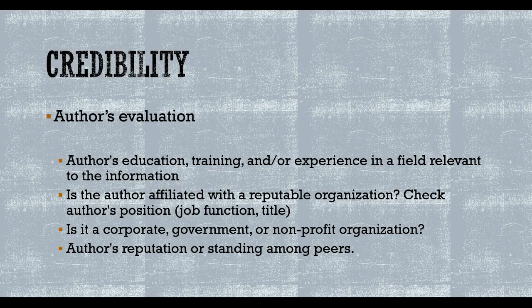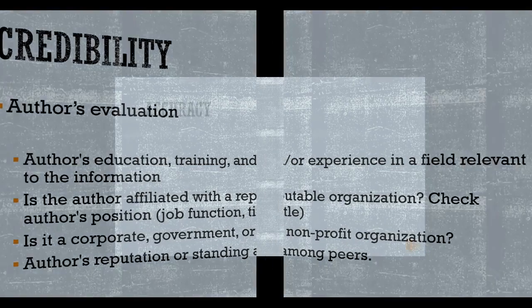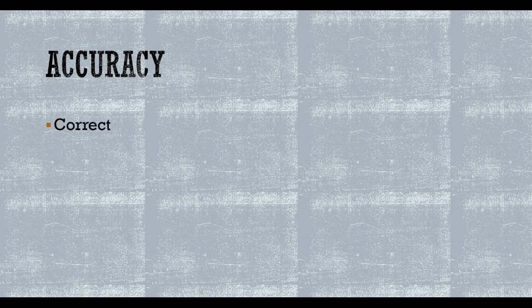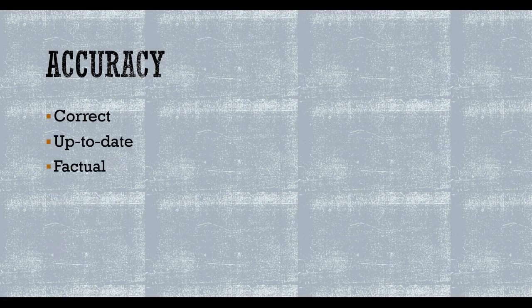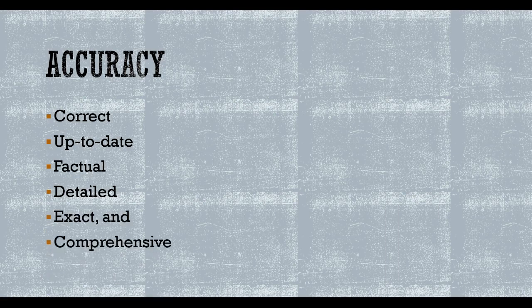Accuracy tests whether the information is correct, up-to-date, factual, detailed, exact, and comprehensive. For example, even though a very credible writer said something correct 60 years ago, it may not be correct today. Similarly, a reputable source might provide up-to-date information, but that information may be only partial and not give the full story.